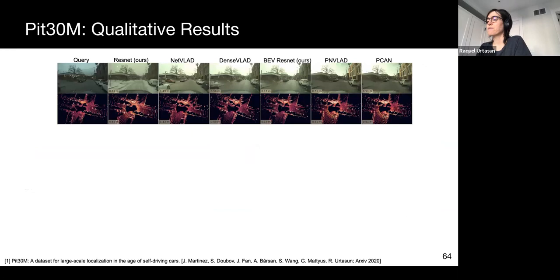Here are some qualitative results of our method. Note that on the left, we show the query, and the first three results are retrieved using the image. The last three results are retrieved using lidar. In this particular example, we see that the image retrieval network finds the same place only 61 centimeters away, but under snow conditions. This means that the network has learned to be invariant to the weather in the scene.